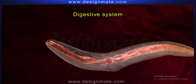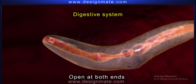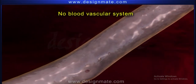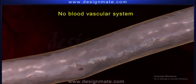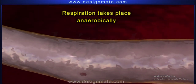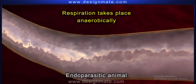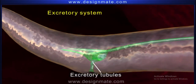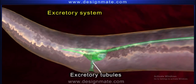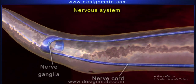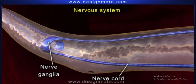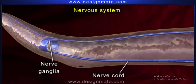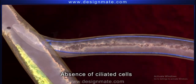The digestive system in these animals is complete and open at both ends. They lack a blood vascular system. Respiration takes place anaerobically, as they are endoparasitic animals. Excretion occurs by excretory tubules.